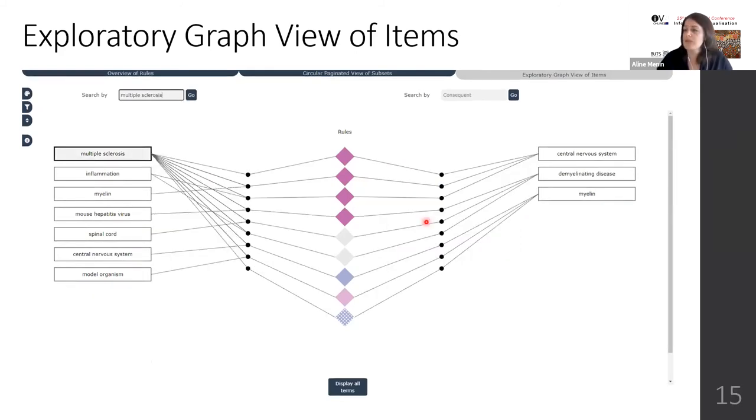Further, the user can use the search bars for antecedent and consequent items to look for an item of interest, which will display all the rules associated with those items and will prompt the user with other items that might be associated to this item, increasing or expanding the analysis.